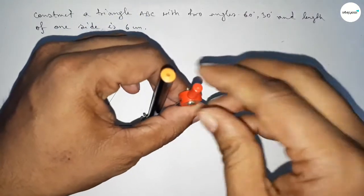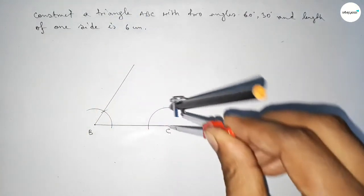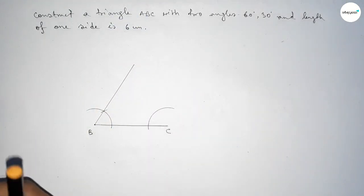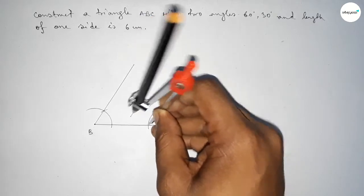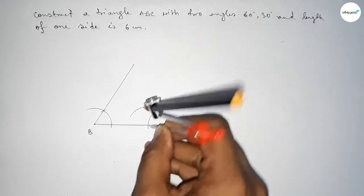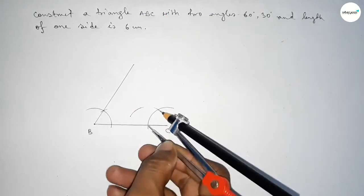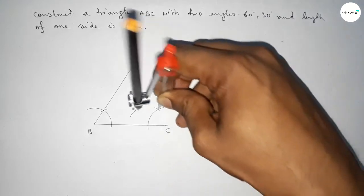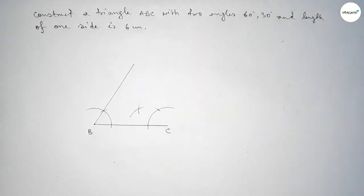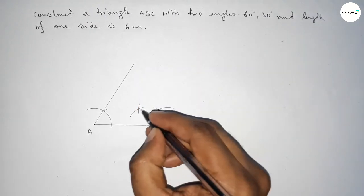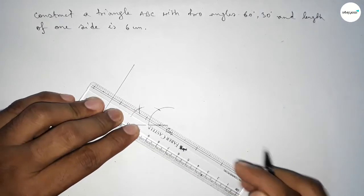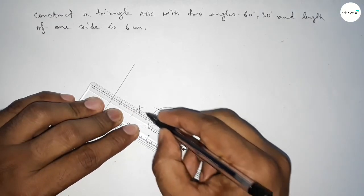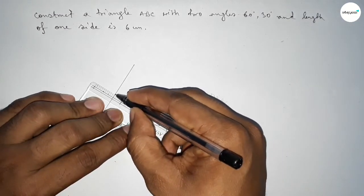Now drawing a 30 degree angle at point C. Putting the compass here and taking any length, drawing an arc, then putting the compass with the same length and drawing another arc, cutting here, and again with the same length cutting here so both curves intersect at a point. Joining this line to get a 30 degree angle.